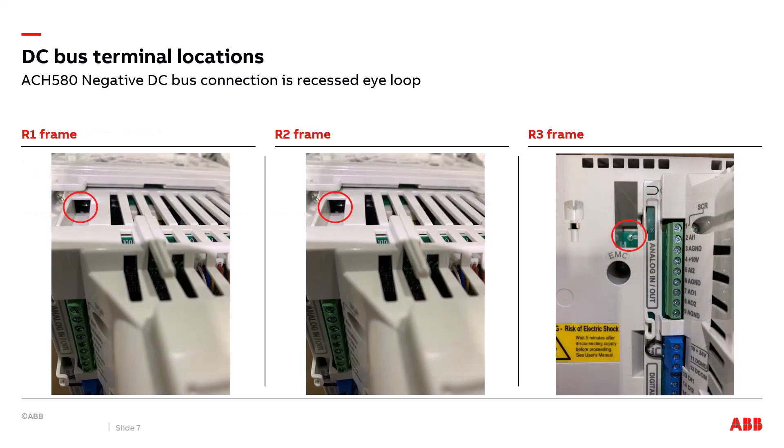The below three images represent the ACH 580, R1, R2, and R3 frame drive's connection point for the negative DC bus. In the red circle on each image there is a recessed eye loop. That is the connection point that you need to connect your voltage probe on your meter to access the negative side of the DC bus.